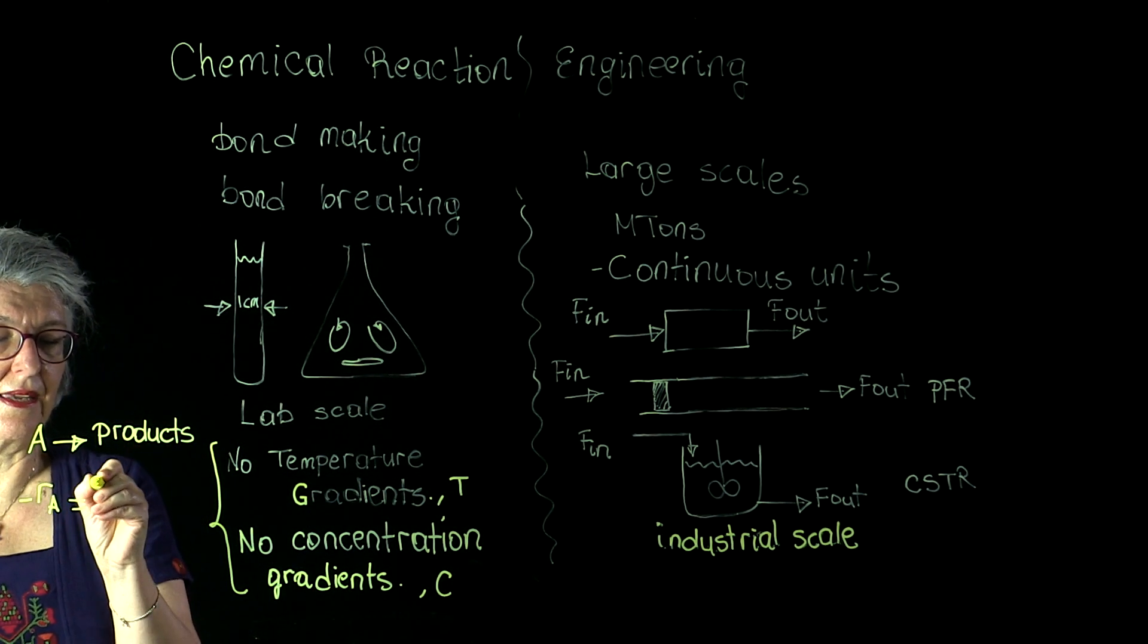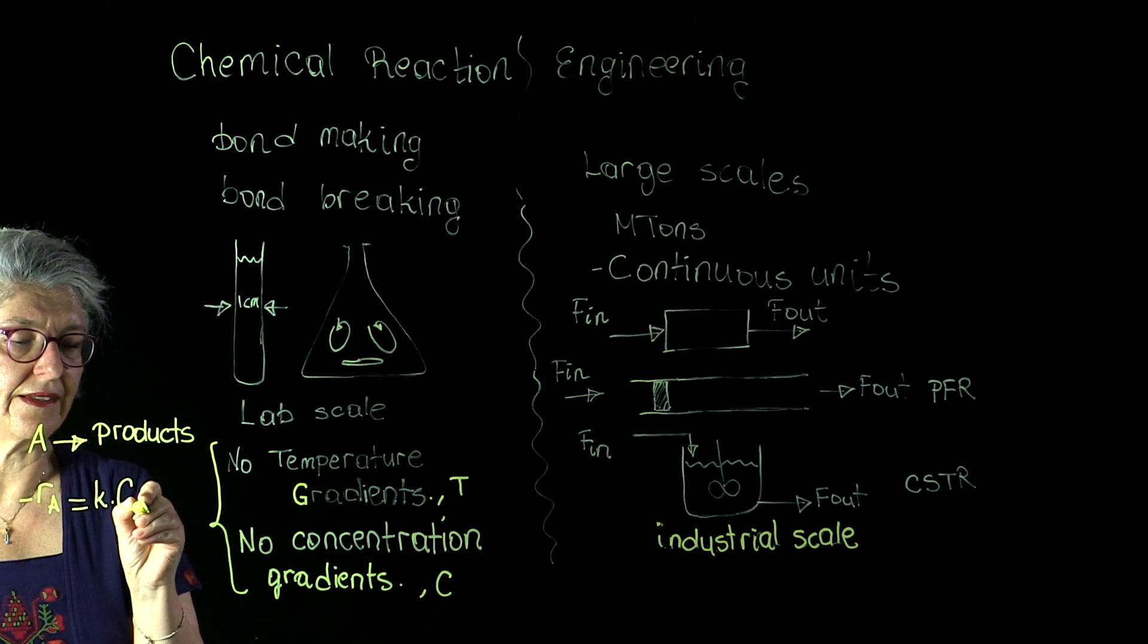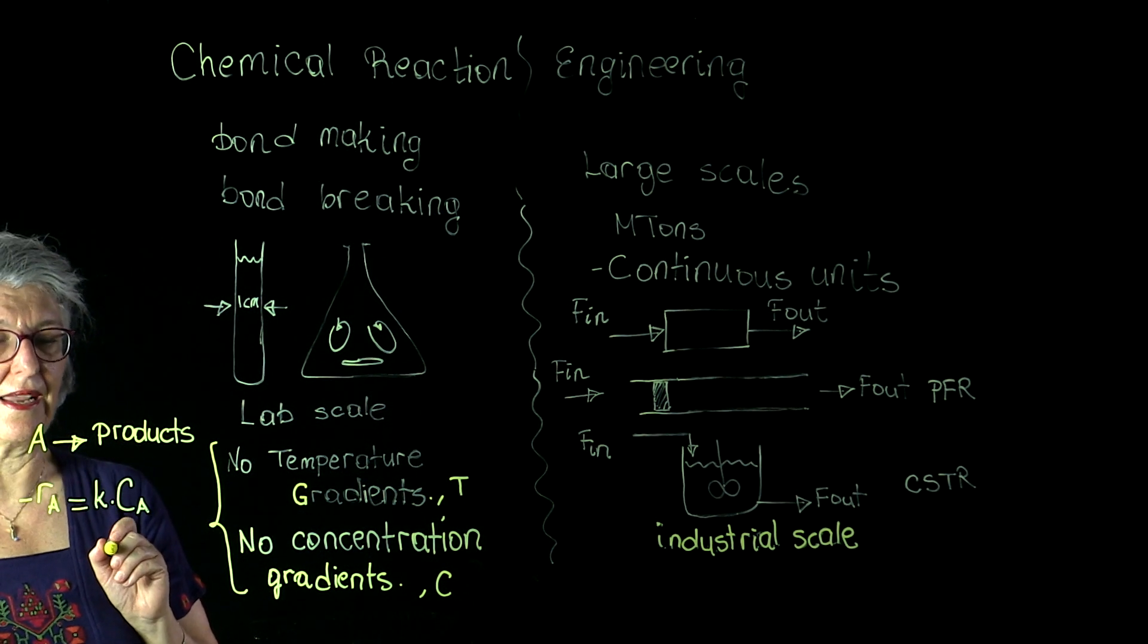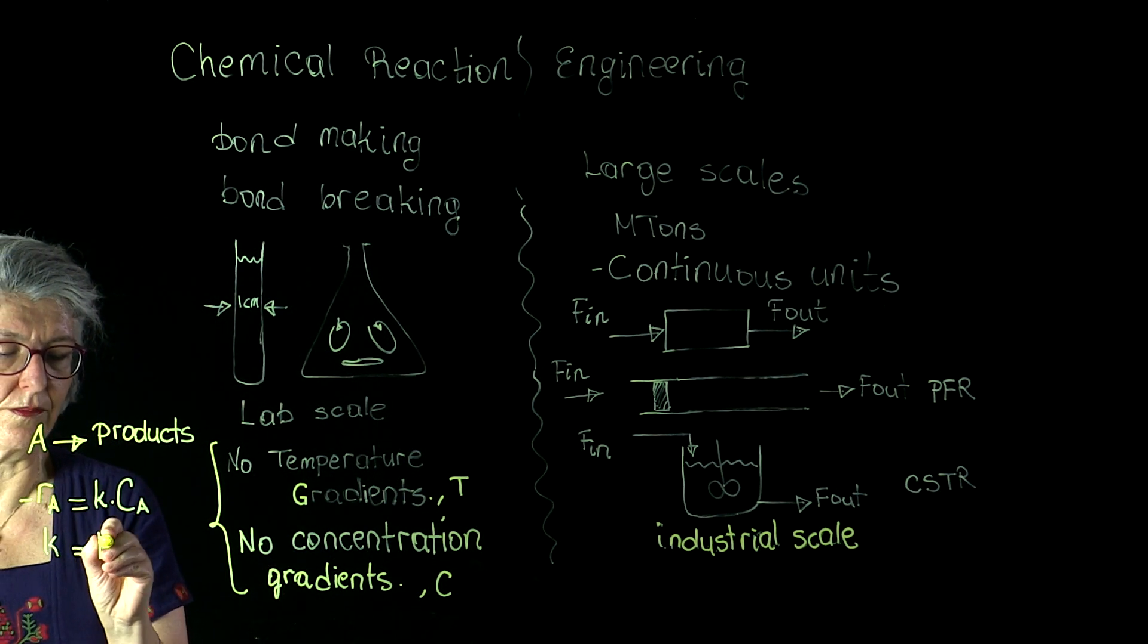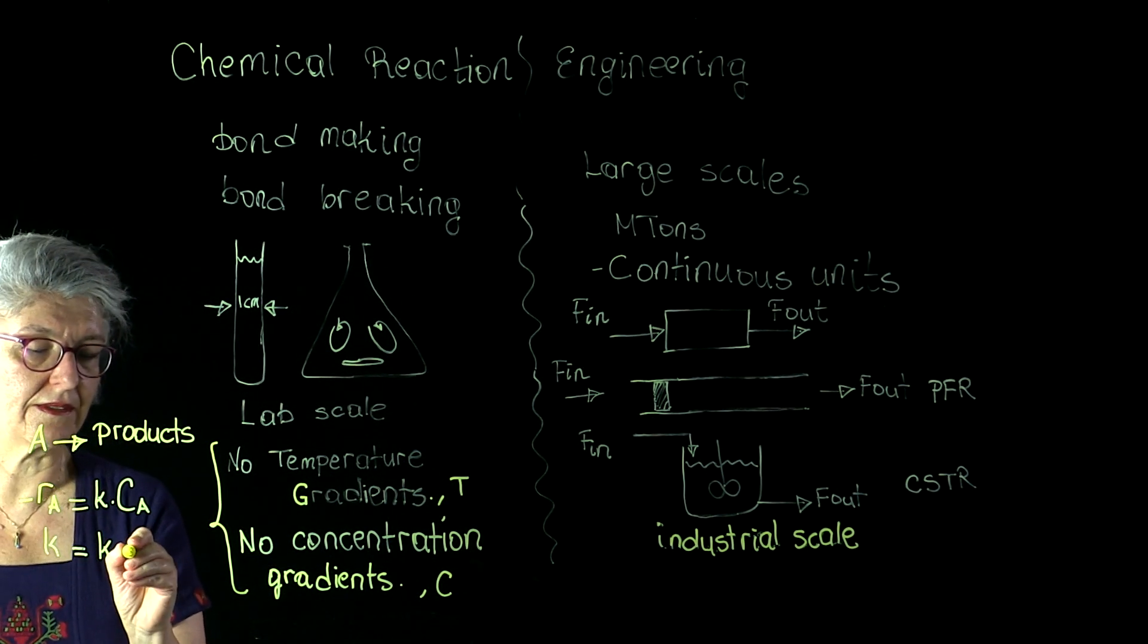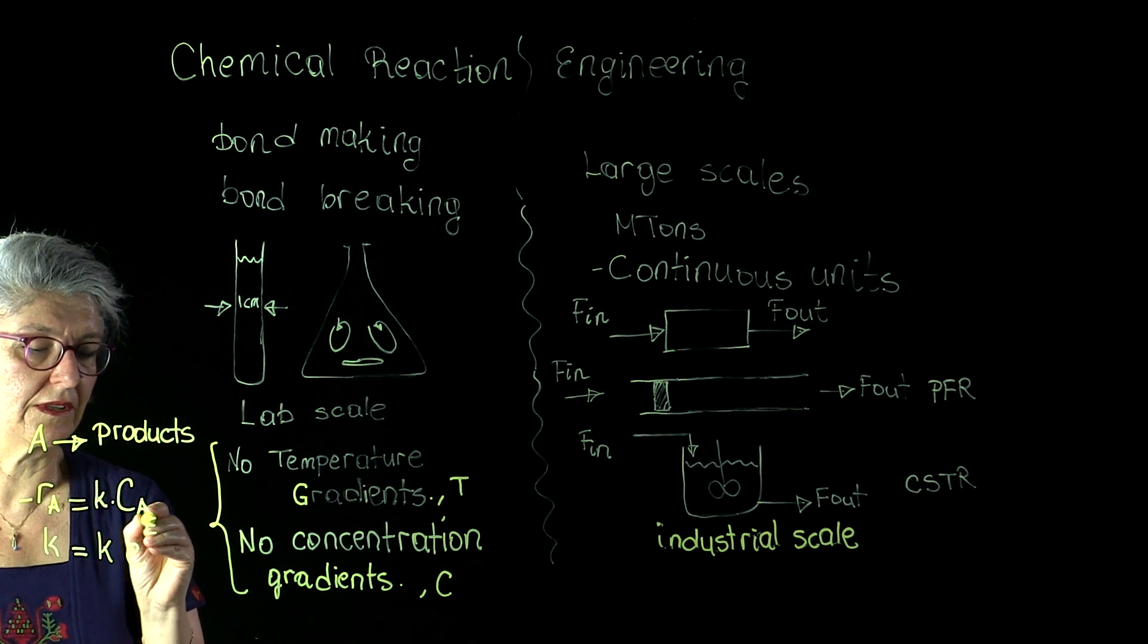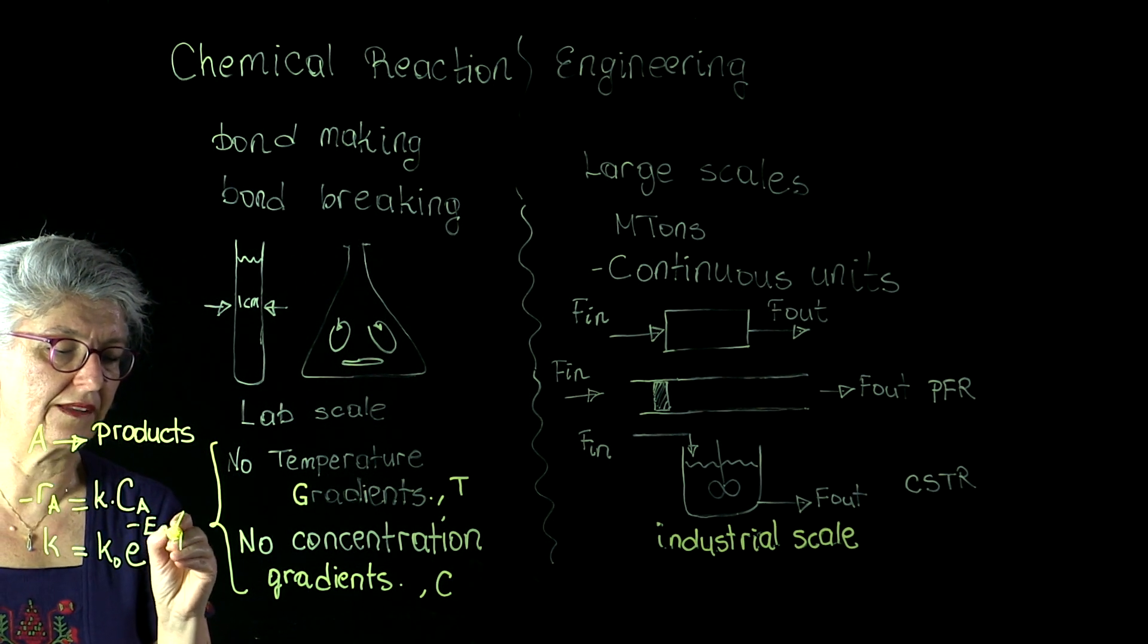we can determine the constitutive relationship as K times C_A to the power N, where C_A is the concentration of species A. And K relates in Arrhenius form, the rate constant to reaction temperature through the activation barrier,